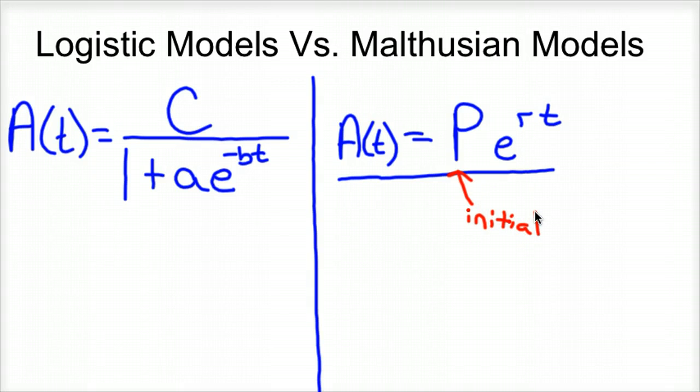E stands for the Euler number, 2.718 and so on. R is your rate of growth, your constant rate of growth, and t is time. The time could be in years, minutes, hours, seconds, doesn't matter, whatever the situation deals with.